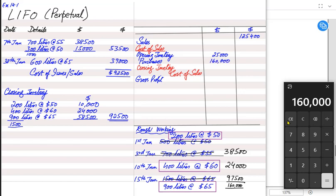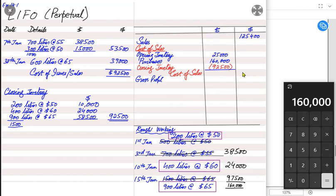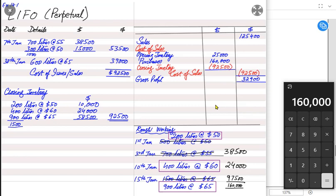Closing inventory, found using last-in first-out, is $67,500. Opening $25,000 plus purchases $160,000 less closing inventory gives cost of sale of $92,500 — matching the figure we already calculated. Deducting cost of sale $92,500 from revenue gives the gross profit. This is how we calculate closing inventory and cost of issue when using the last-in first-out method to value inventory.